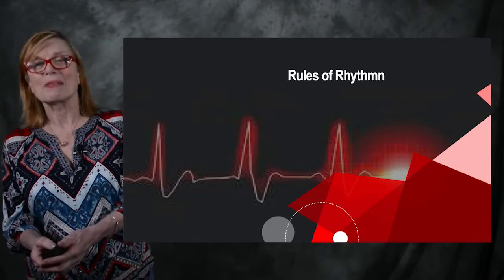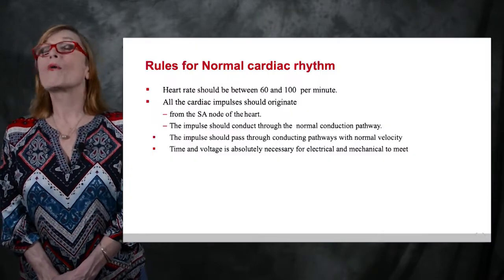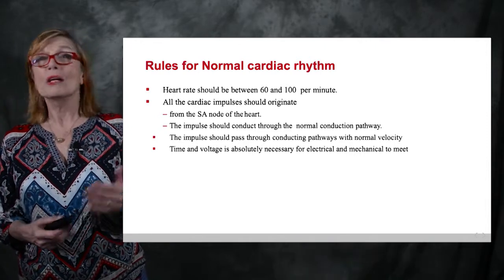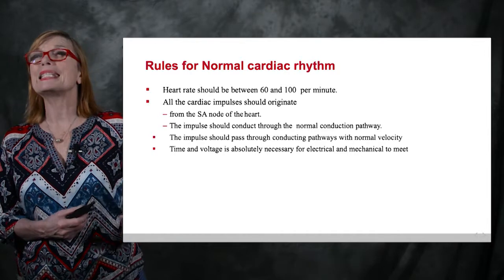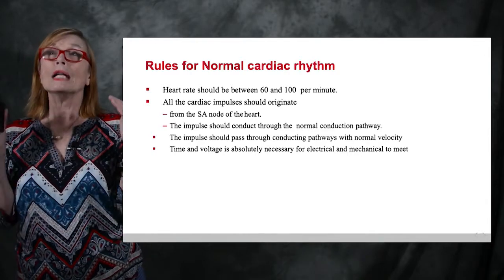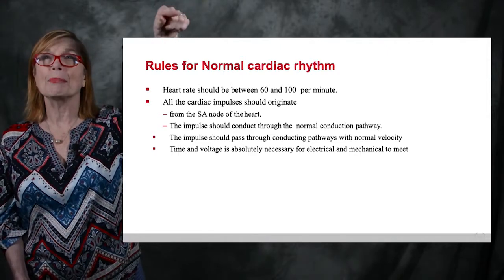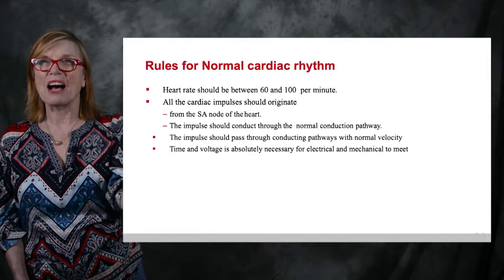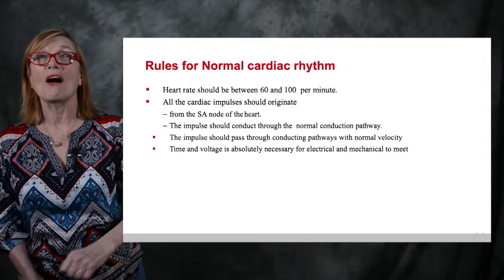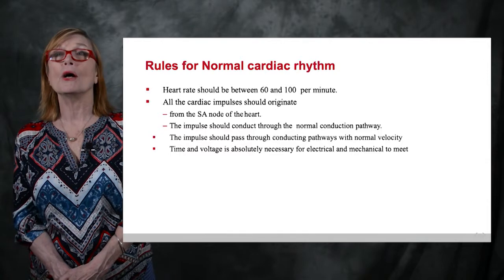The rules for normal cardiac rhythm: first, your normal heart rate should be between 60 and 100 beats per minute. All impulses should originate from the very top of the heart down to the very bottom of the heart, and those impulses should begin at the sinus node.